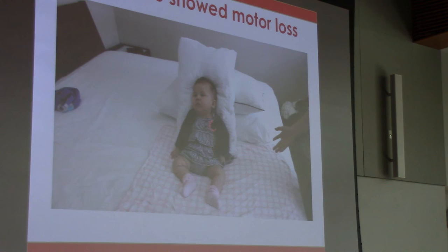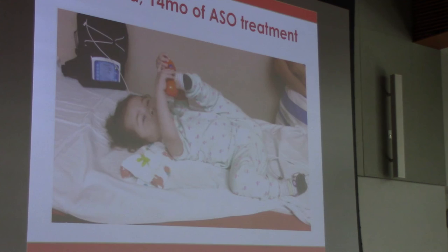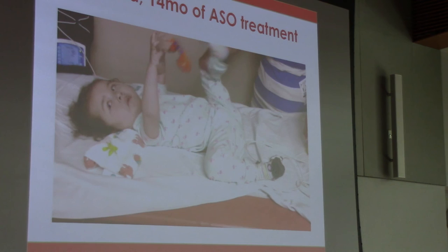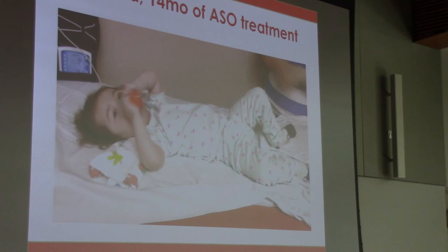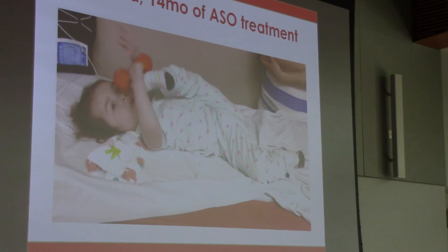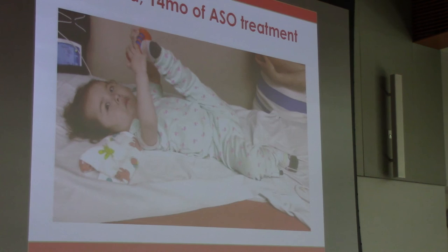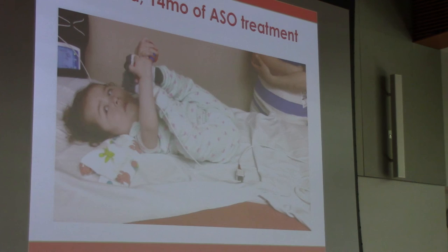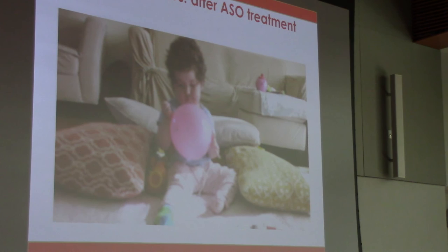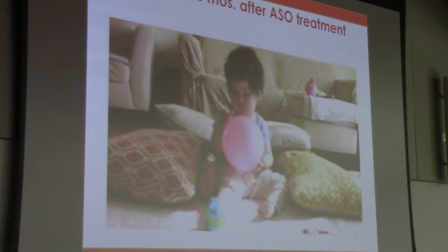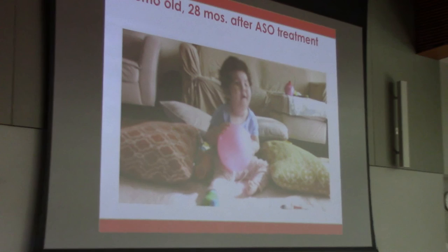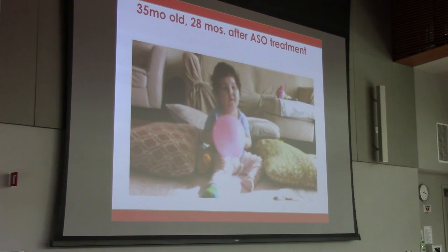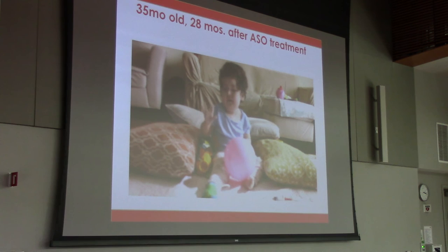Here she is at 14 months — she can lift her legs up, which she could not do before. And here she is at 28 months: she's not normal, she's still weak, but she can sit independently. She yells at her baby sister to get out of the way, who won't move. She's doing quite well.